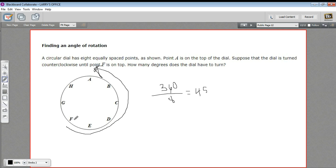What that means, if we turn just a little bit so that F is where E is, that would be 45 degrees. And if we did a little bit more to turn F to where D is, that'd be another 45, another 45, another 45, and another 45. So we're doing one, two, three, four, five chunks of 45 degrees.